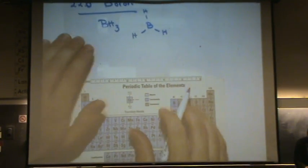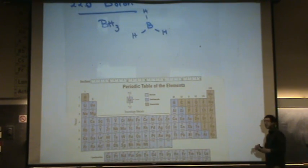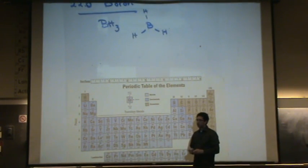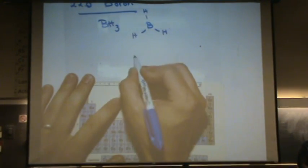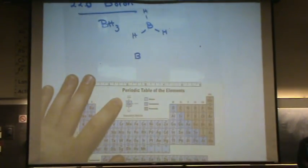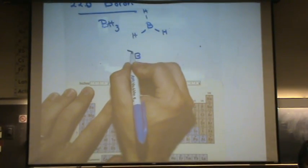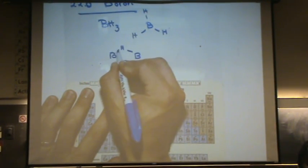Now, hydrogen forms how many bonds in any compound? One. Yeah, except for this one. A boron compound, and some others can do this as well, can form two bonds.